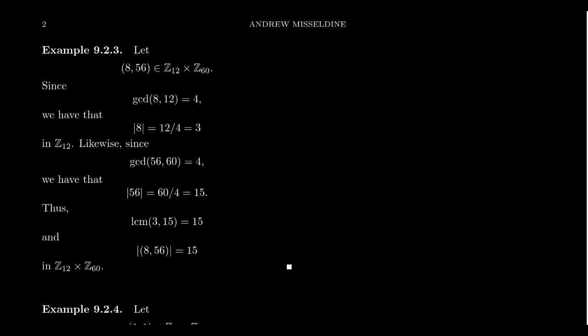So let's see an example of this real quick. Consider the group Z₁₂ cross Z₆₀. So we take the cyclic group of order 12 and cross it with the cyclic group of order 60. And let's take the specific elements (8,56) inside of that group. Well, how do we compute the order of 8 inside of Z₁₂? As we've seen previously, we want to compute the greatest common divisor between the element 8 and the order of the cyclic group 12. That's going to be 4. And therefore, the order of 8 inside of Z₁₂ will be the order 12 divided by that GCD 4, which says that 8 is an element of order 3.